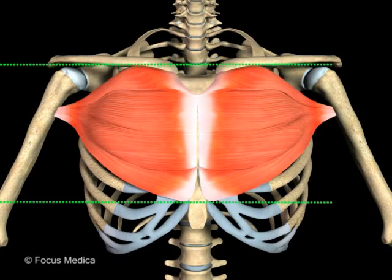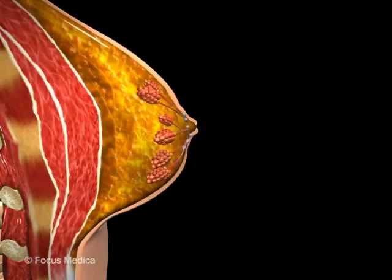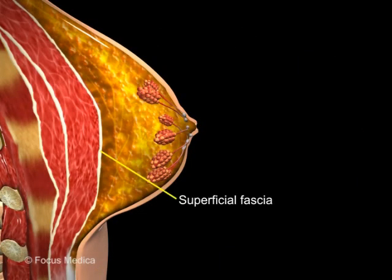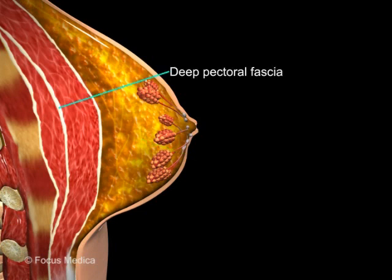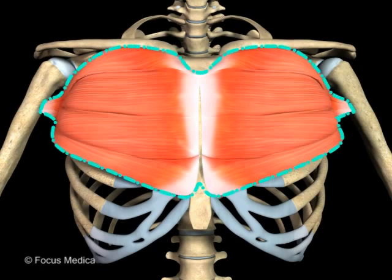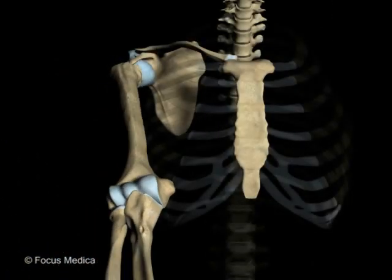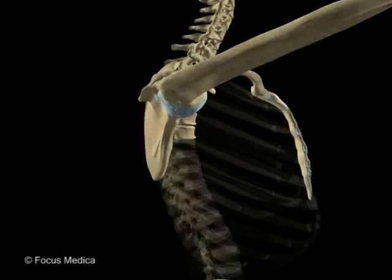The pectoral region is located in front of the anterior thoracic wall, an area that connects the upper limb to the upper trunk. It includes the skin, superficial fascia, breast, deep pectoral fascia, and muscles. The pectoralis major is a large fan-shaped muscle of the anterior chest wall. It brings about adduction, medial rotation, and flexion of the humerus at the shoulder joint.